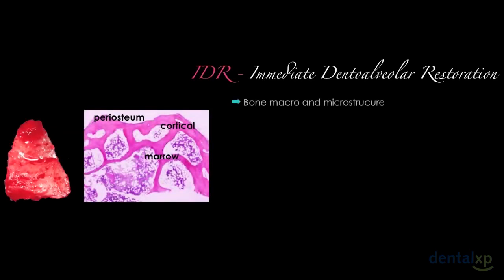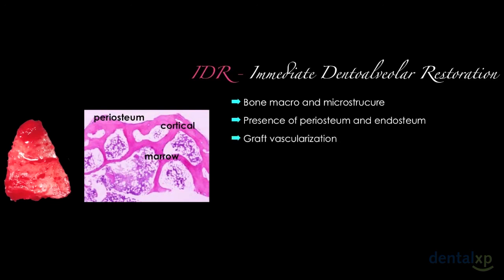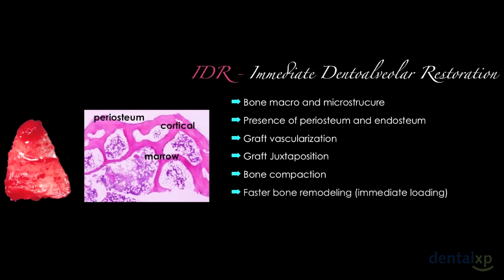The positive results should be related to the bone macro and micro-architecture, the presence of periosteum and endosteum in this kind of graft, the rich vascularization of the graft, the juxtaposition of the graft into the receptor site, the excellent condensation of medullary bone into the gaps promoting faster bone remodeling — mainly when associated with immediate loading — and everything maintained by the adequate emergency profile of the prosthetic crown.